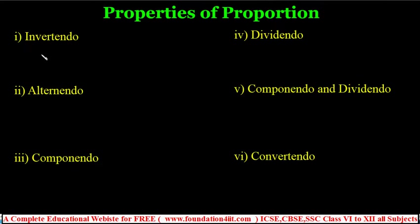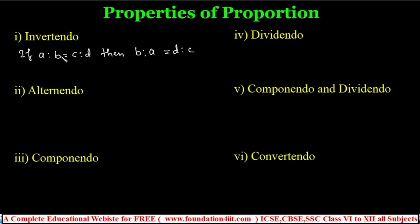What is invertendo? We know that if a, b, c, d are in proportion — that is, if a is to b equals c is to d — then according to invertendo, we can write b is to a equals d is to c. It is simply the reverse. All the same values do not change.